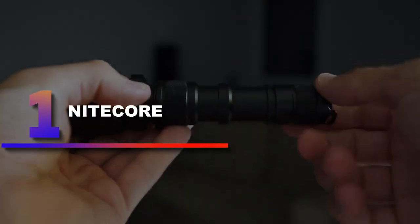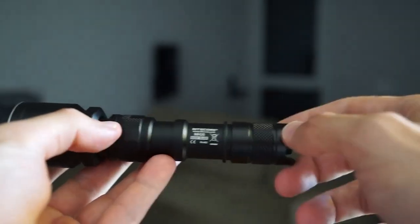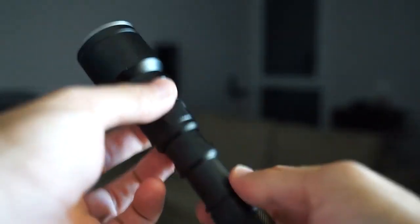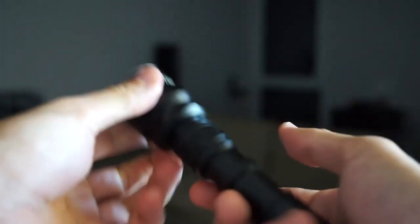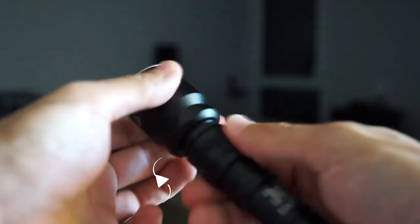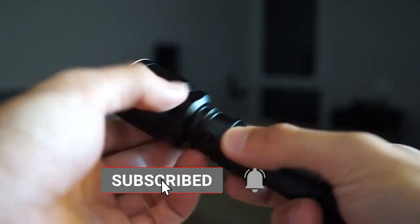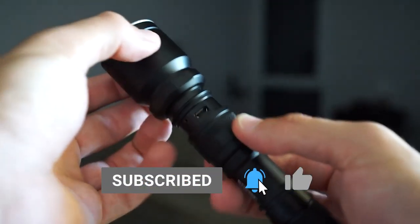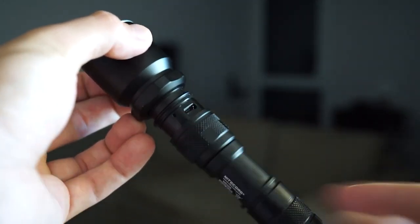Number 1: Nightcore MH25S. Nobody loves fumbling around with batteries when their light is losing juice, so we included another powerful USB-C rechargeable option, the Nightcore MH25S. This torch is pretty similar spec-wise to our top overall recommendation, the Phoenix PD36R, so you can rest assured it's good to go. This bad boy is well-engineered and full of clever features.